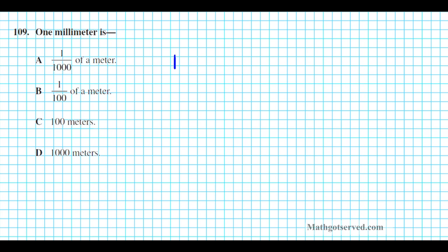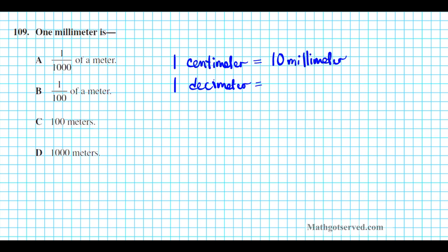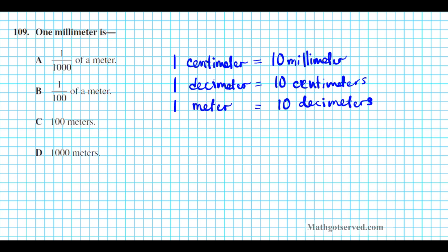One centimeter is equal to 10 millimeters. One decimeter is equal to 10 centimeters. And lastly, one meter is equal to 10 decimeters. These conversion factors help you go from millimeters all the way to meters.